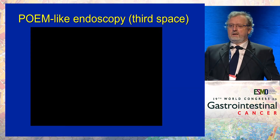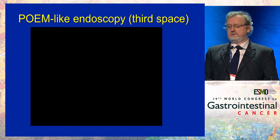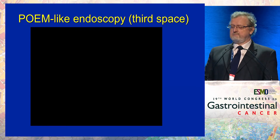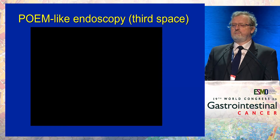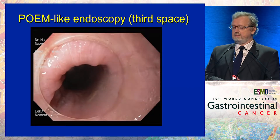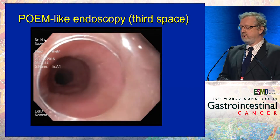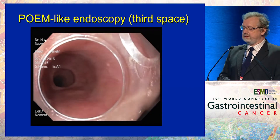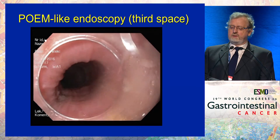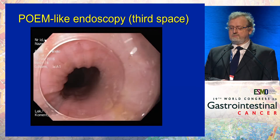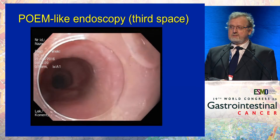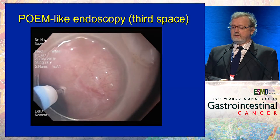Another idea already present is using the third space — the space between the submucosa and the muscle layer. To show you that it's possible and easy, I want to show you the POEM procedure. We are in the middle esophagus and it is a very easy, very safe procedure.